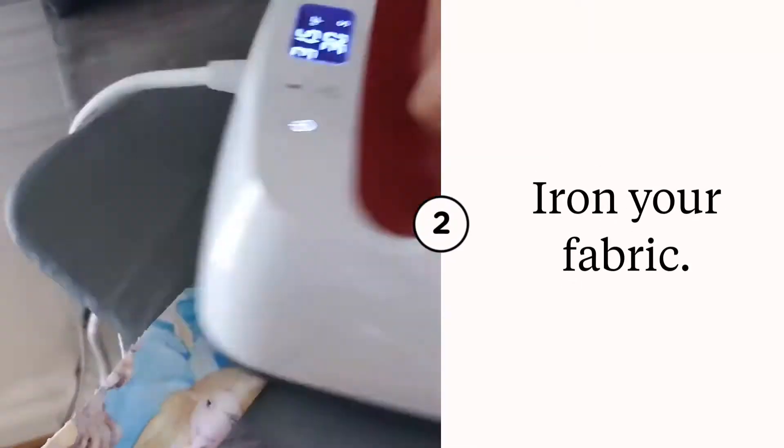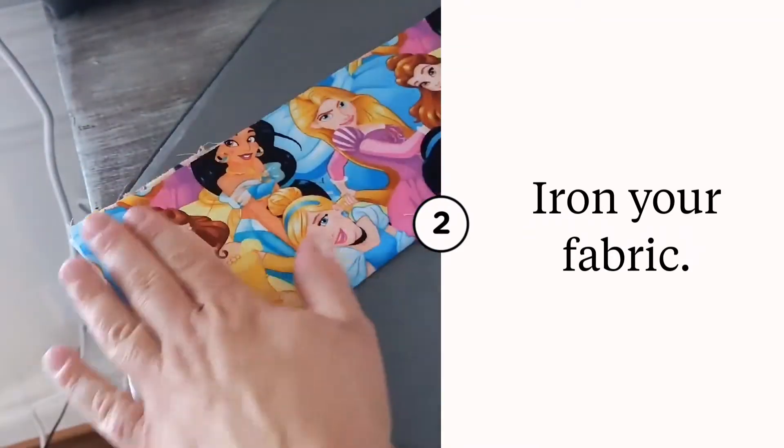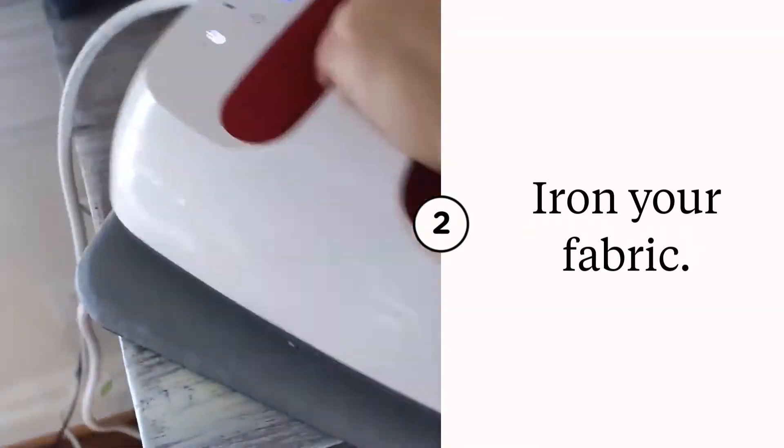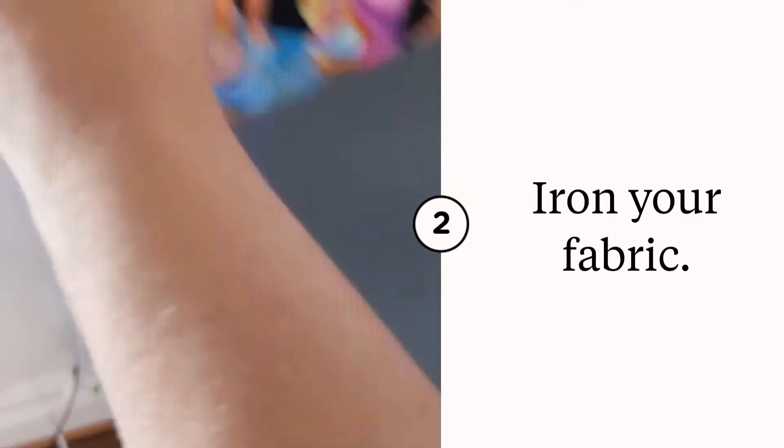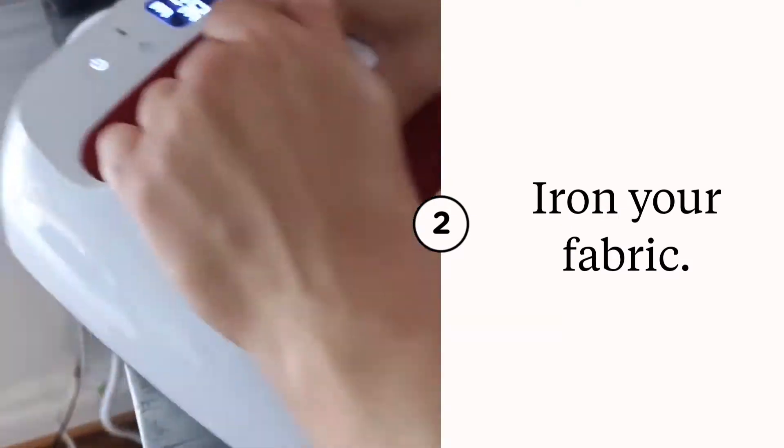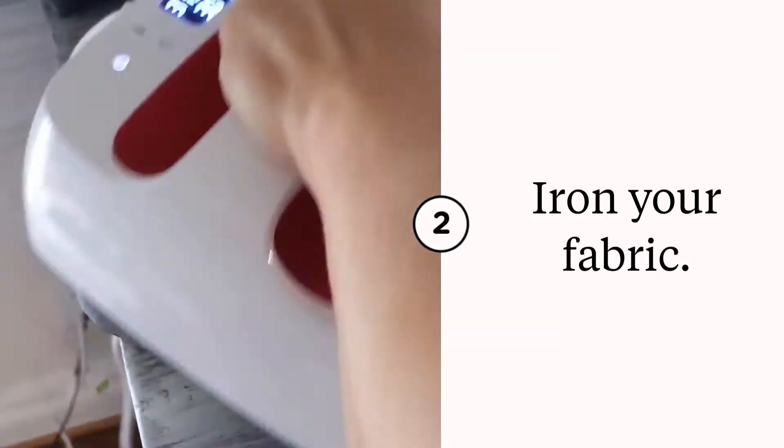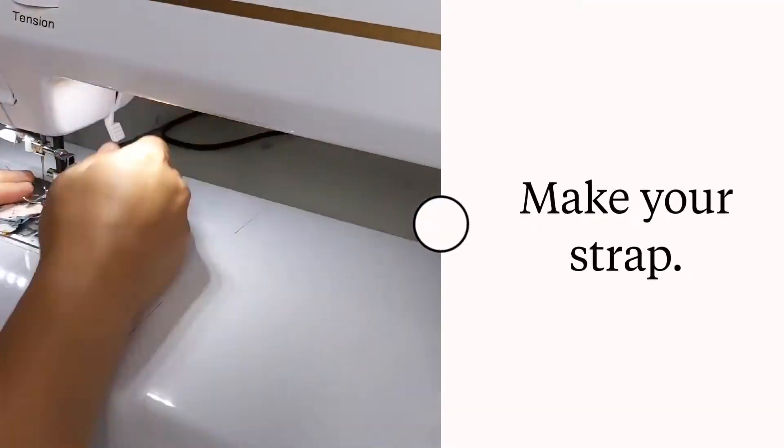Your first step is to press all of your fabric. Make sure it's nice and ironed. This is the strap piece, this is the piece for the divider, and then last we've got the piece for the outside of the bag.